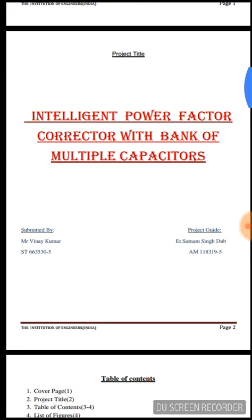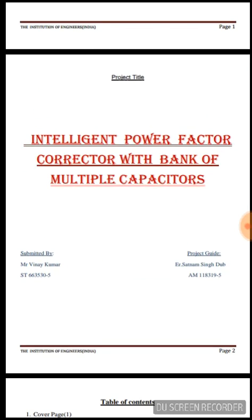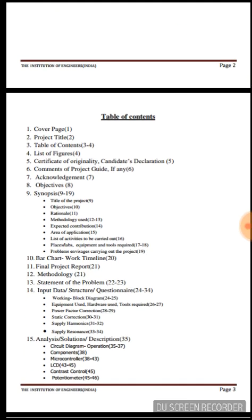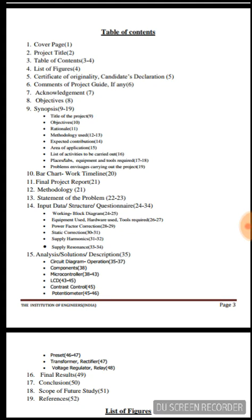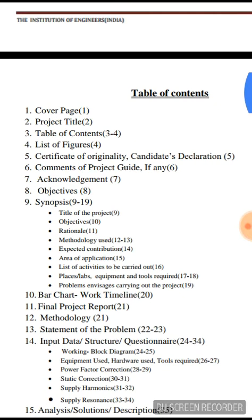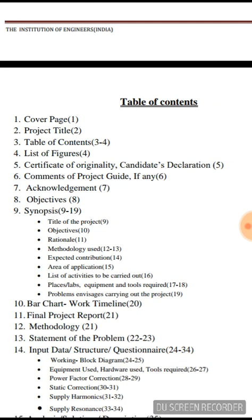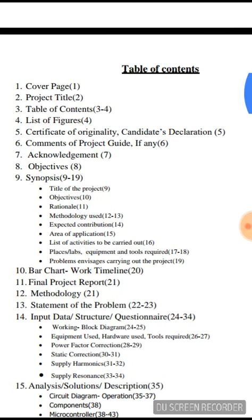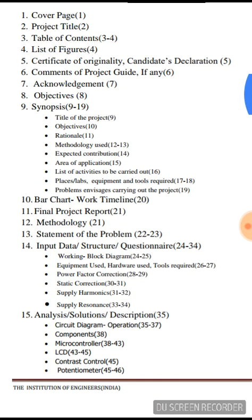Now let's start with the working of the project report. The first thing given is the project title: 'Intelligent Power Factor Controller Bank of Multiple Capacitors.' The next very important thing is the table of contents. Please make sure that the format provided by the Institution of Engineers through mail or other communication media is followed strictly. The project report made here strictly follows the IEI guidelines, which include: certificate of originality, candidates declaration form, comments of project guide, acknowledgement, objectives, and synopsis.